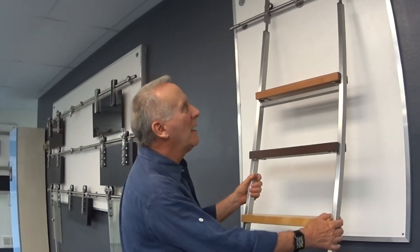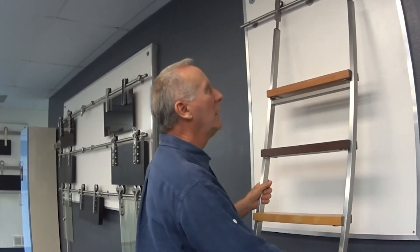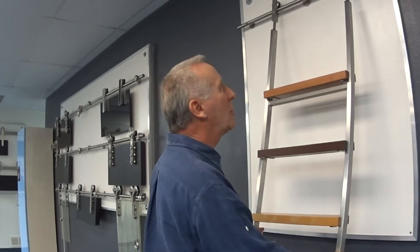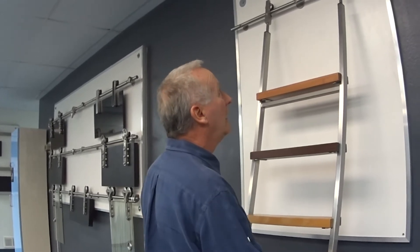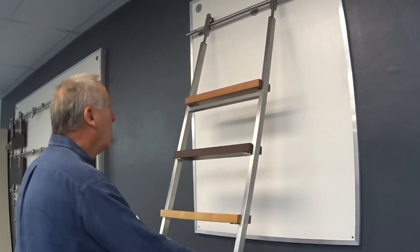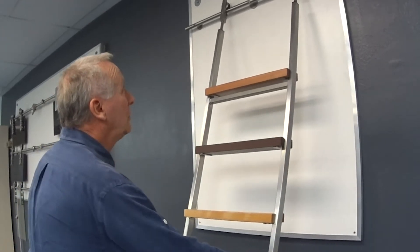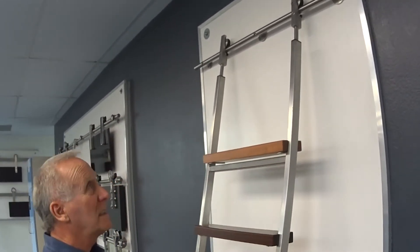This is an example of one of our library ladders with a telescoping top fixture. It rolls smoothly and can negotiate curves if necessary.